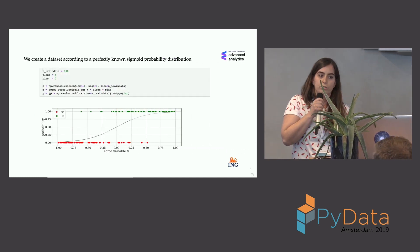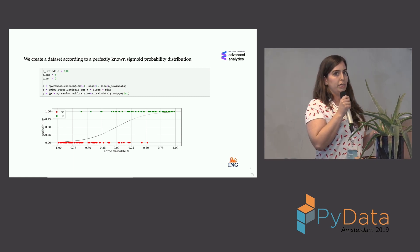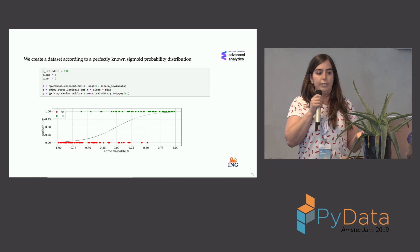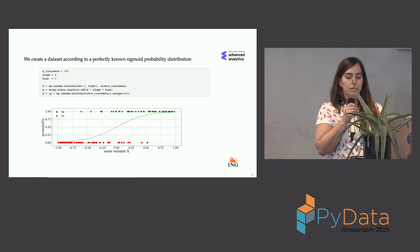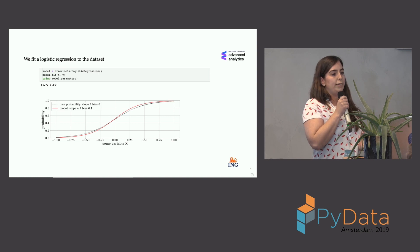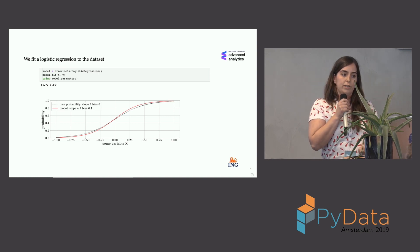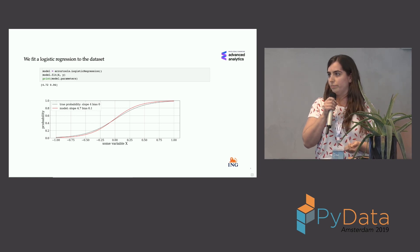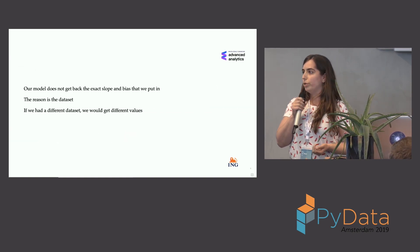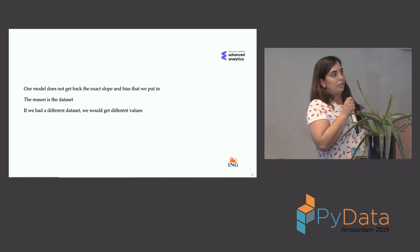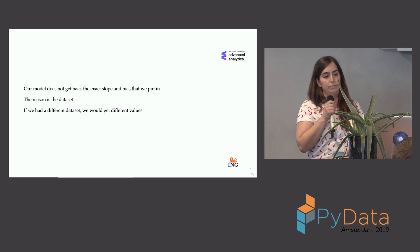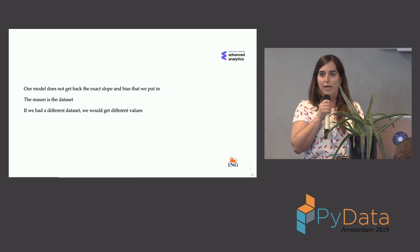Let's start with an example. Say we are creating a dataset according to a non-sigmoid probability distribution. We know we have a slope of 4 and a bias of 0, and we're generating 100 data points. If we try to fit a logistic regression to this, we'll probably find a slightly different slope and bias — in this case 4.7 and 0.1 — because we only looked at 100 data points.